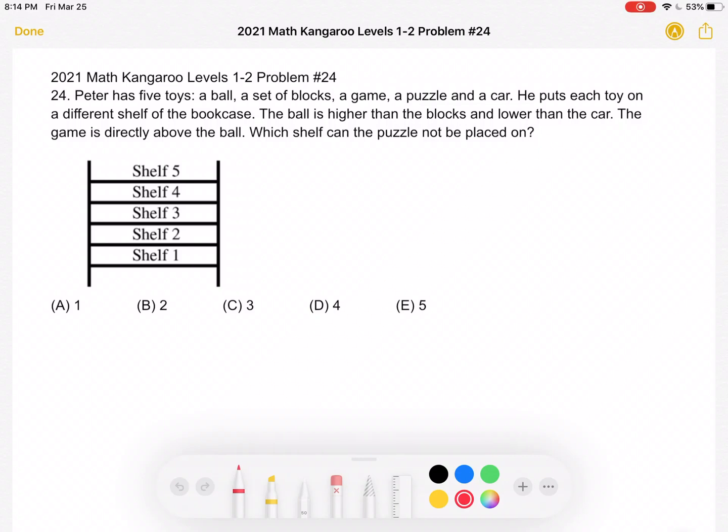This is the 2021 Math Kangaroo Levels 1-2 Problem number 24. Peter has five toys: a ball, a set of blocks, a game, a puzzle, and a car. He puts each toy on a different shelf of the bookcase. The ball is higher than the blocks and lower than the car. The game is directly above the ball. Which shelf can the puzzle not be placed on?